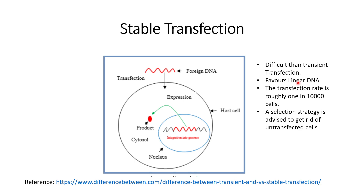In transient transfection, highly coiled DNA is favored, whereas linear DNA is favored for stable transfection, and stable transfection is more difficult compared to transient transfection. Stable transfection will last longer — the future generations of cells will have expression of the foreign DNA — whereas in transient transfection, the foreign DNA will degrade over time and eventually there will be no foreign DNA expression in the host cell.